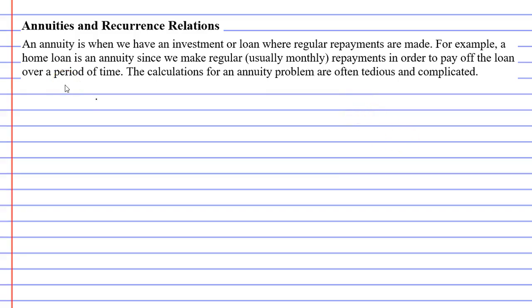One will be an example of an investment, and the other will be an example of a loan. For both examples, we're going to start off with the same principal or present value. Let's say our present value for both the investment and the loan is going to be $2,000.